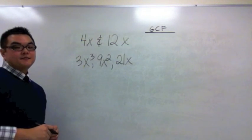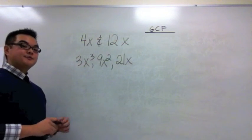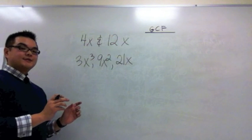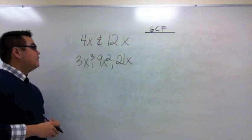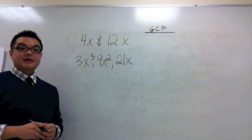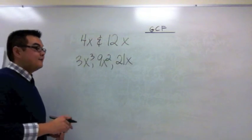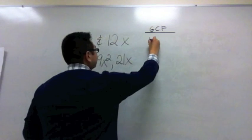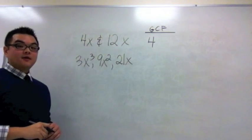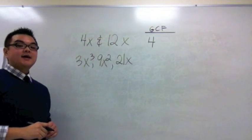To find the GCF of numerical and variable expressions, what we do is we take a look at the numerical parts first and then the variable parts second. If you look at 4 and 12, we can use any of the methods that's shown before. The GCF of 4 and 12 is 4, and then ignoring the numerical parts, the GCF of x and x is x.